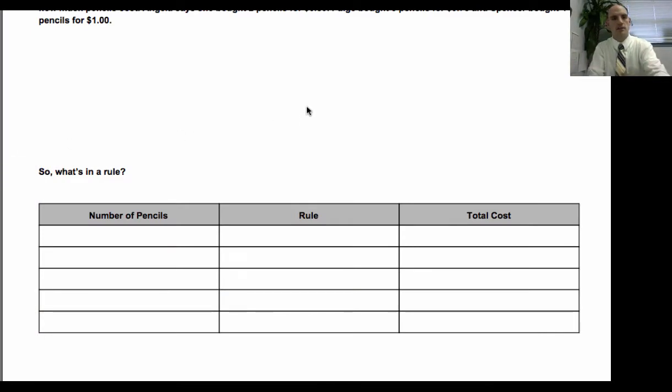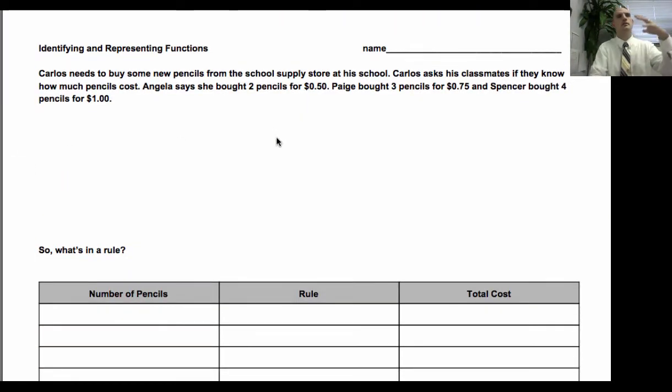Interesting. All right. So what we were looking at in the video was something that we're buying in multiples. Okay. And so for the TVs, that's a lot of money to spend, obviously. And it's an example of, you know, you buy one, it's this much. Two is this much. Three is this much.